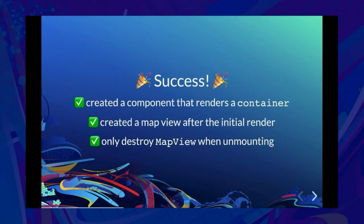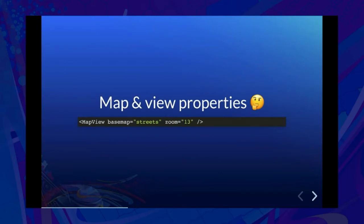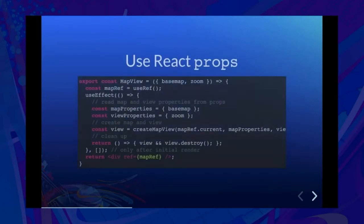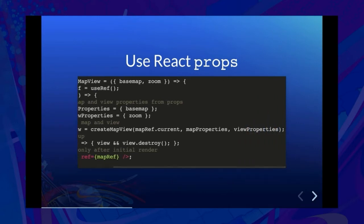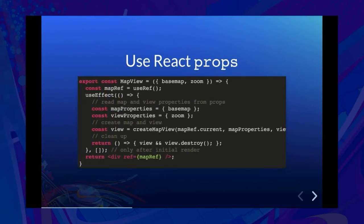We've created a fully functioning map component following all best practices, but it's not very useful yet — it draws the same map every time. It would be much more useful if we could pass in properties like base map or zoom level. In React, props are passed in as the first argument to the function. We use base map and zoom to build up map properties and view properties, then modify the util function to take those as additional arguments. That's the only difference — our component is now much more useful.